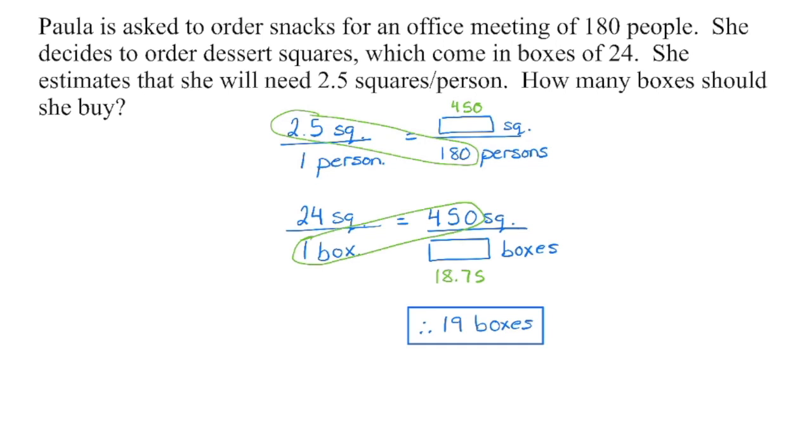We cannot buy a part of a box. Even if this number here in the 10th position was less than five, you still are going to round up in this case. You don't want to be short on food. It's always better to have a little bit more. So we would round up regardless of what the digit was in the 10th place. And then you can always have leftovers for lunch the next day.